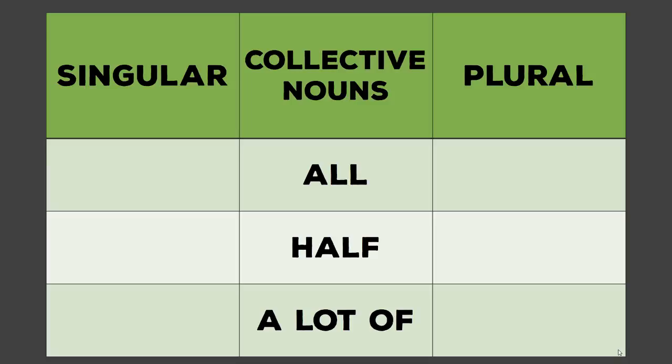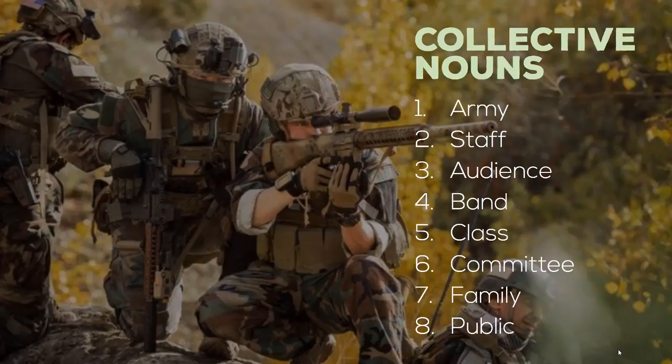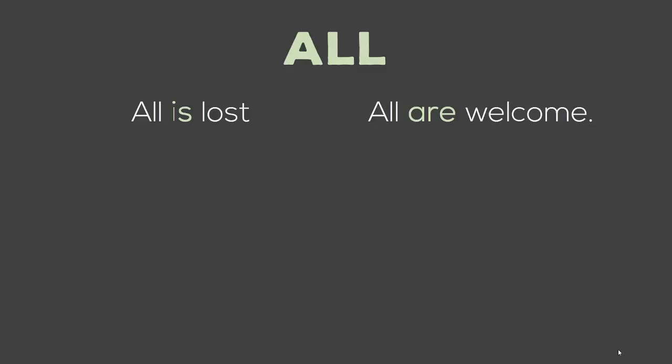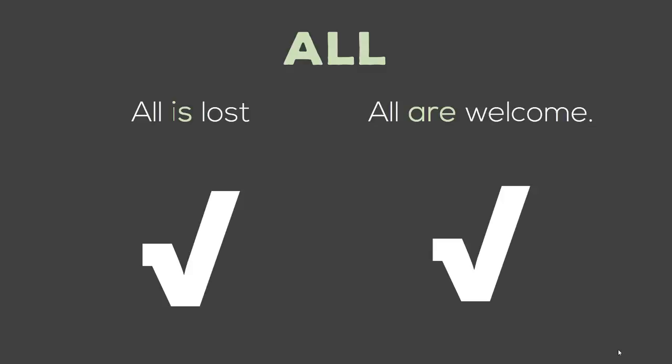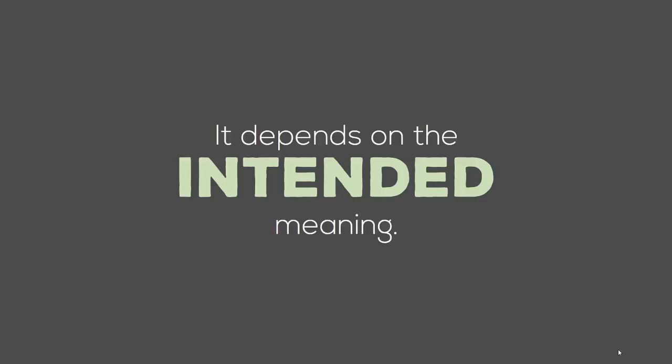For collective nouns such as all, half, a lot of, it can be both singular and plural. Collective nouns like army, staff, audience, band, class, community, family, public — these can be both singular and plural depending on your intention. For example: all is lost — the situation is lost, singular. All are welcome — all humans and pets are welcome, plural. It depends on the intended meaning, which we have to examine from the sentence in detail.